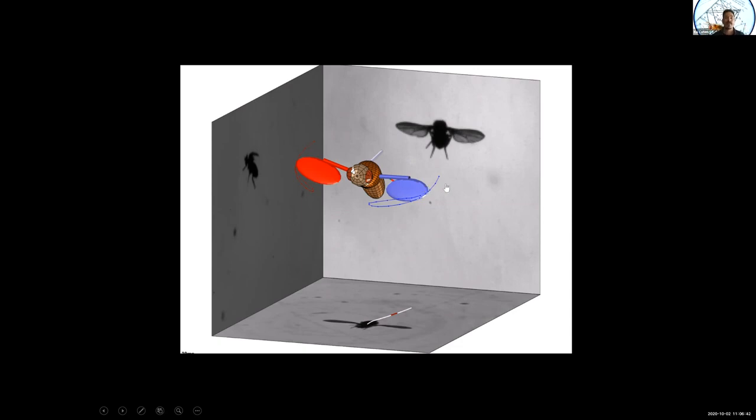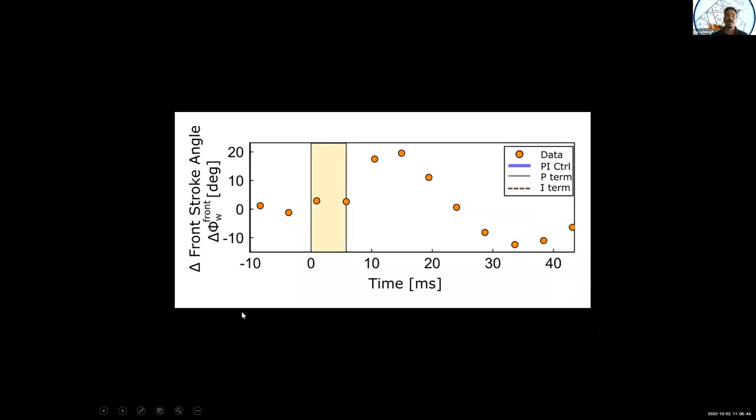Very briefly, what it does is it changes how far forward it sweeps its wings before turning them back. If the fly pitches forward, then it sweeps the wings more to the front. That extra lift creates a torque that pitches it back. And if it pitches backwards, then it flips the wings less in the front. So the torques from when the wings are in the back pitch it forward. And we can quantify that. This is the angle, the front stroke angle as a function of time.